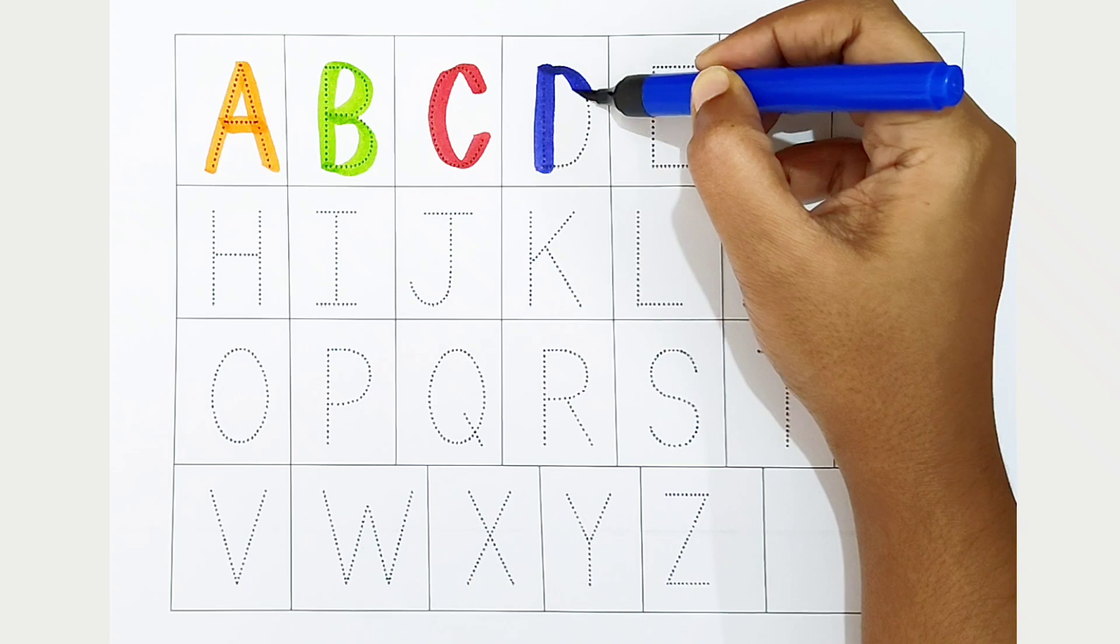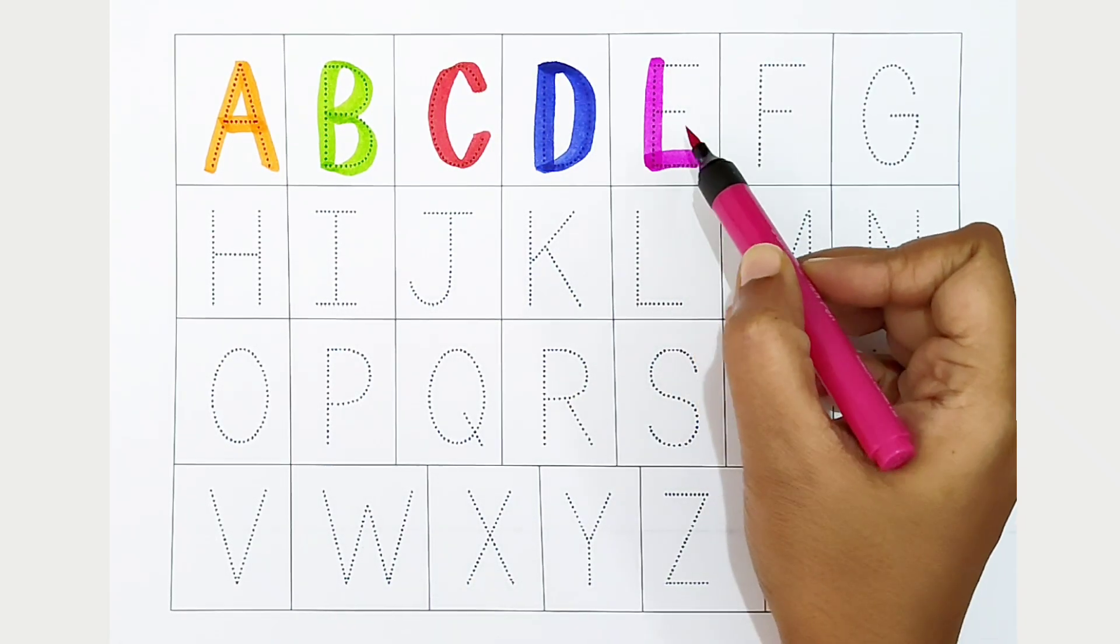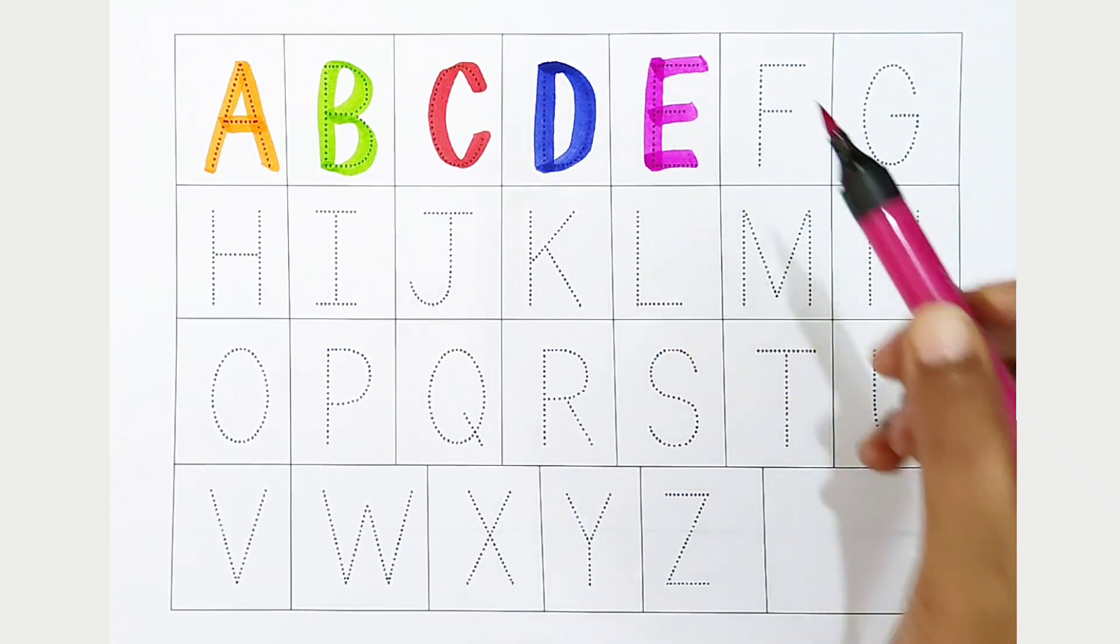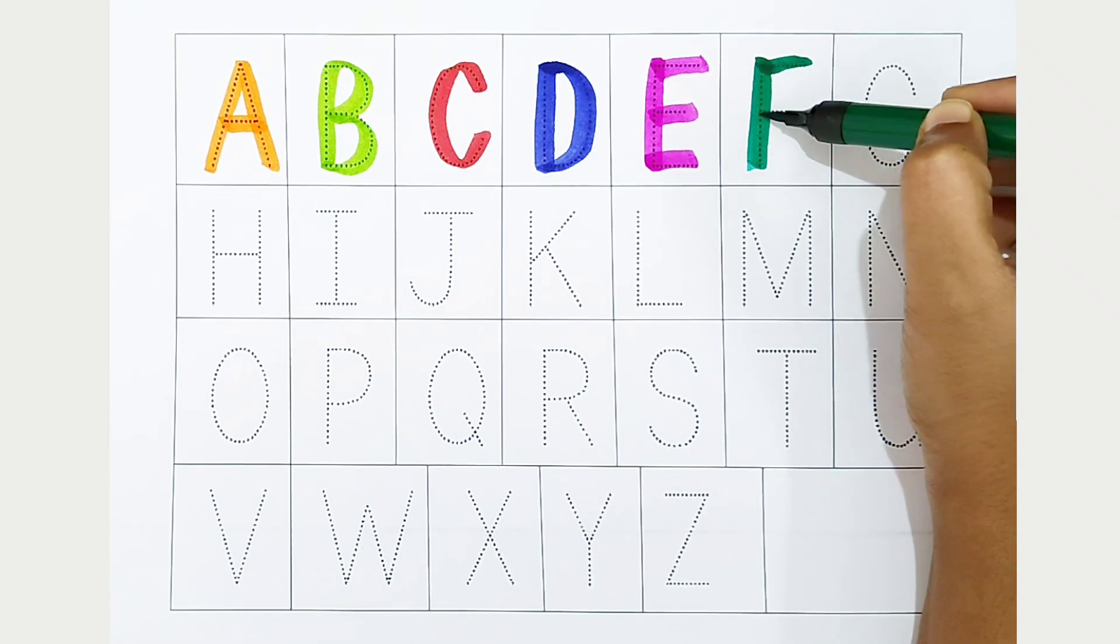color. D is for donkey. E, dark pink color. E is for eggplant. F, dark green color. F is for